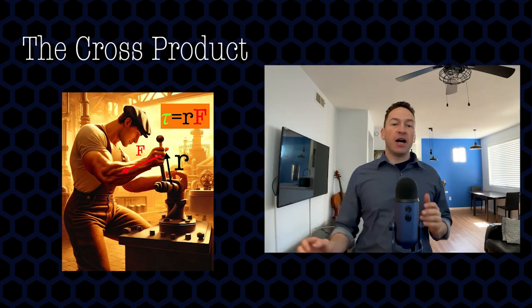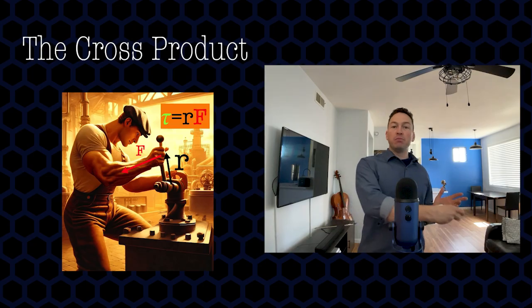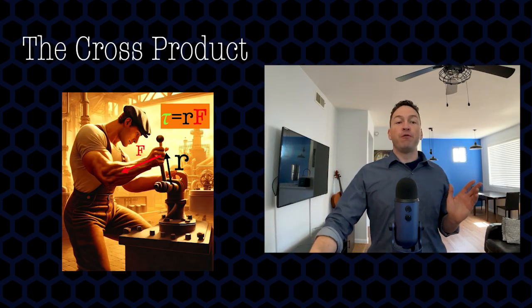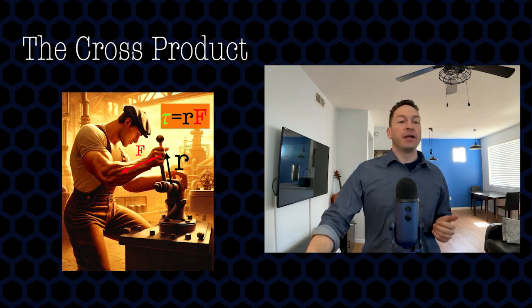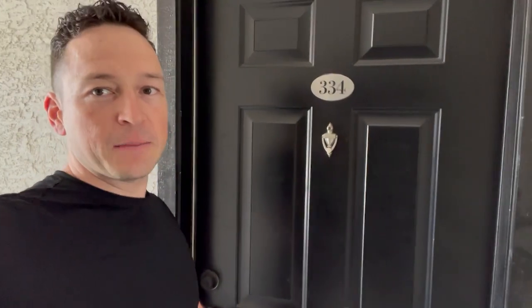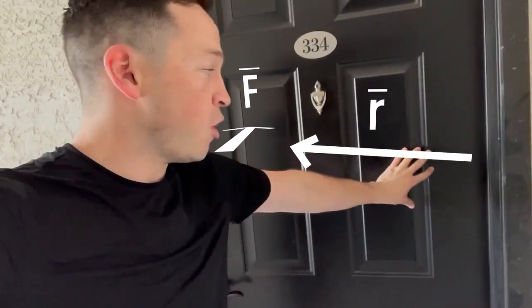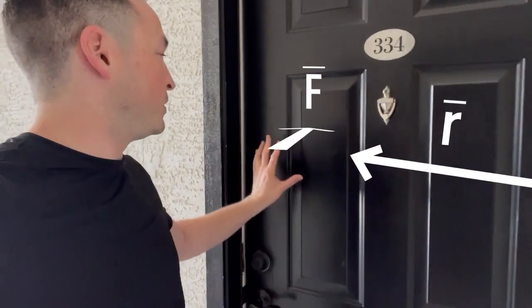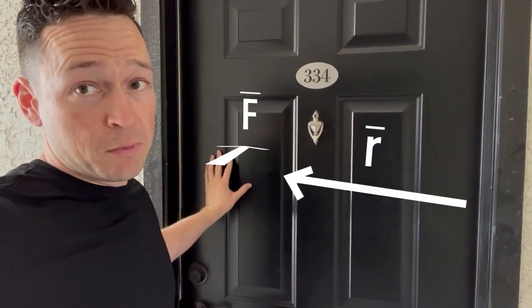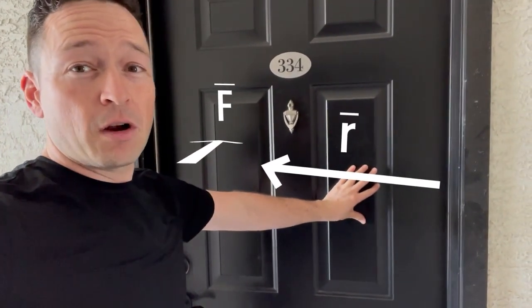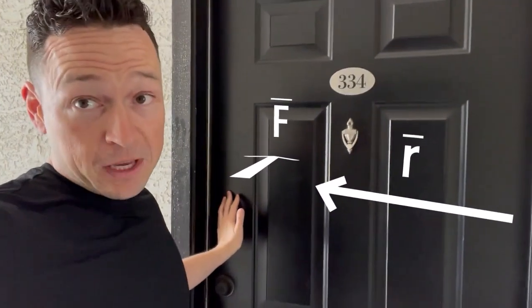Torque finds how much change in rotational motion a given force will cause. For example, when you pull a lever, the torque is equal to the force multiplied by the distance of that force from the pivot point. To understand this intuitively, think about the way that normal people open a door. Usually we push over here as opposed to over here — because if we push far from the hinge, the lever arm is quite long, which means it requires less force to open the door. If you push near the hinge, the lever arm is very short, which means it requires more force.